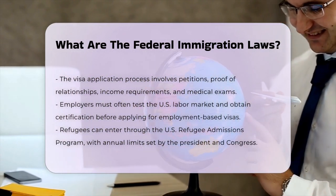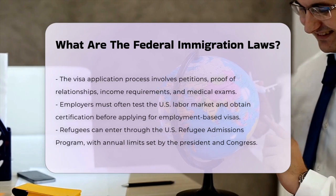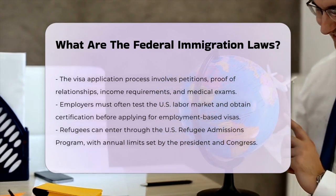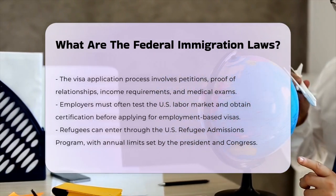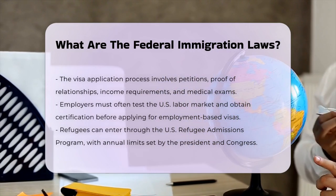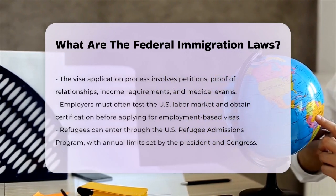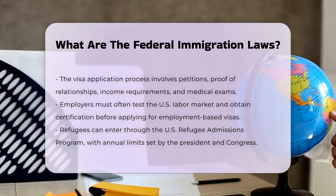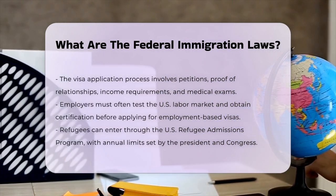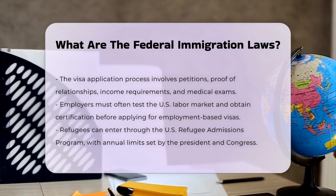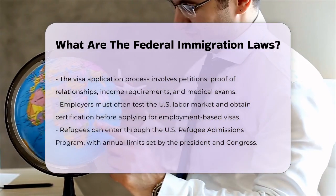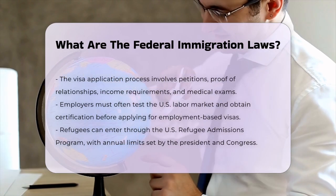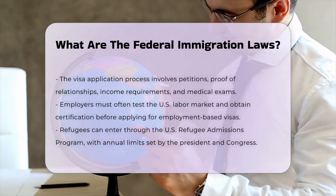Refugees can also enter the U.S. through the U.S. Refugee Admissions Program, or with the President consulting with Congress to set an annual number of refugees to be admitted. In addition to these visa categories, there are humanitarian protections like asylum and temporary protected status, which don't have numerical caps but have other restrictions.